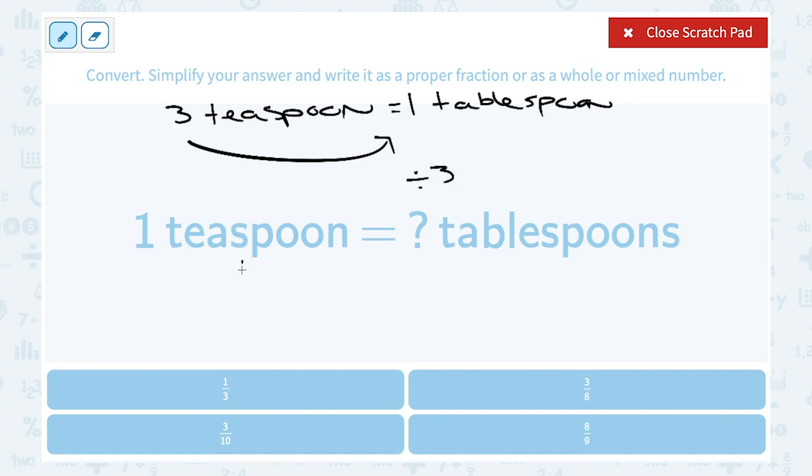So one divided by three, remember you can write that as a fraction. That's the same thing as saying one over three. So one teaspoon is a third of a tablespoon.